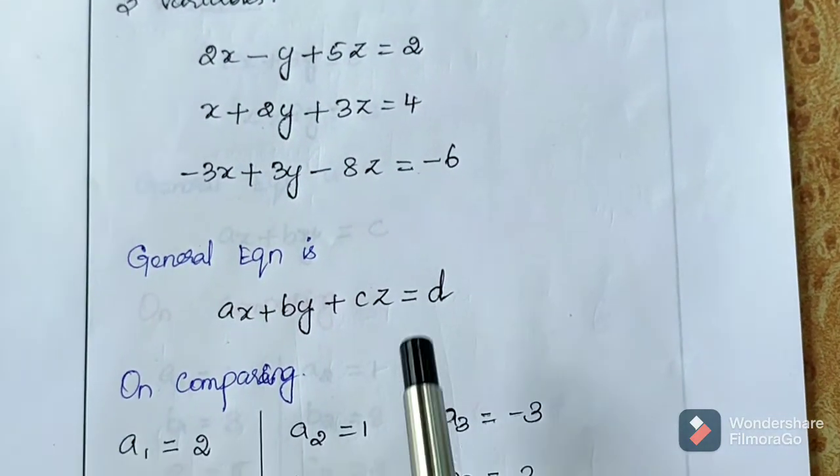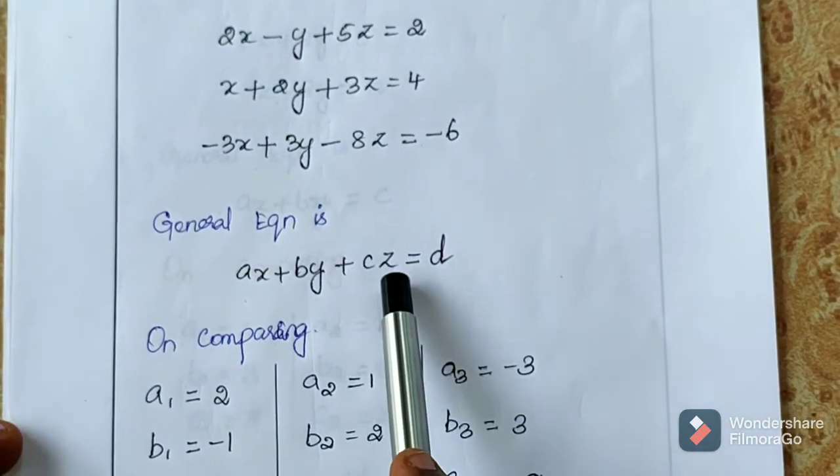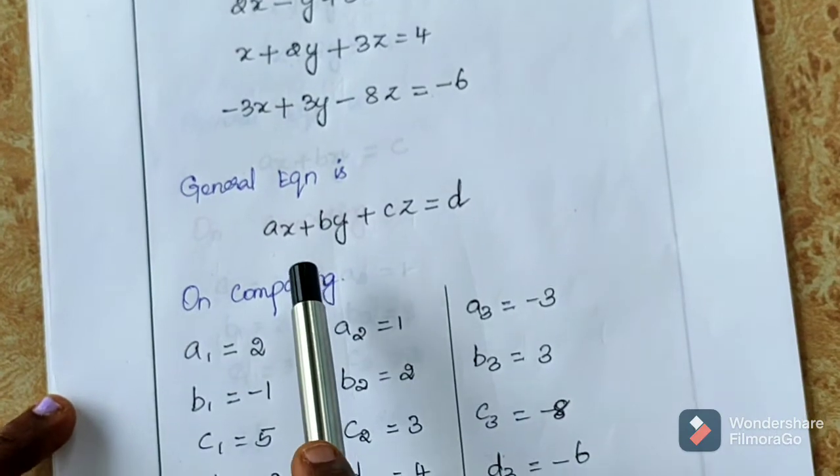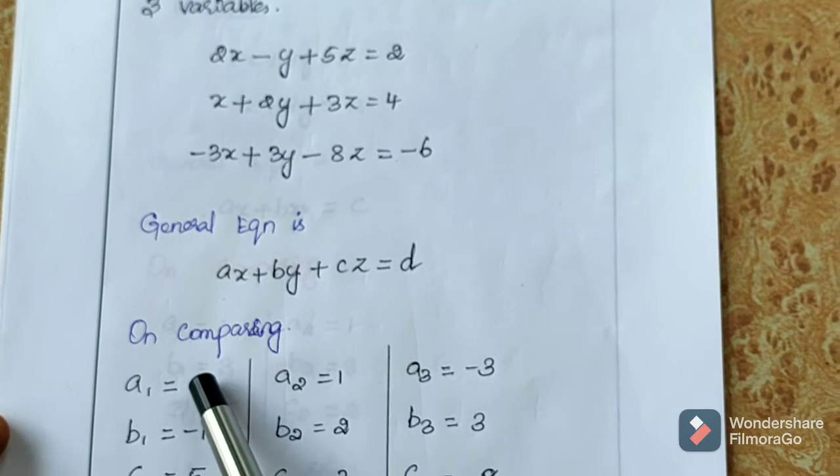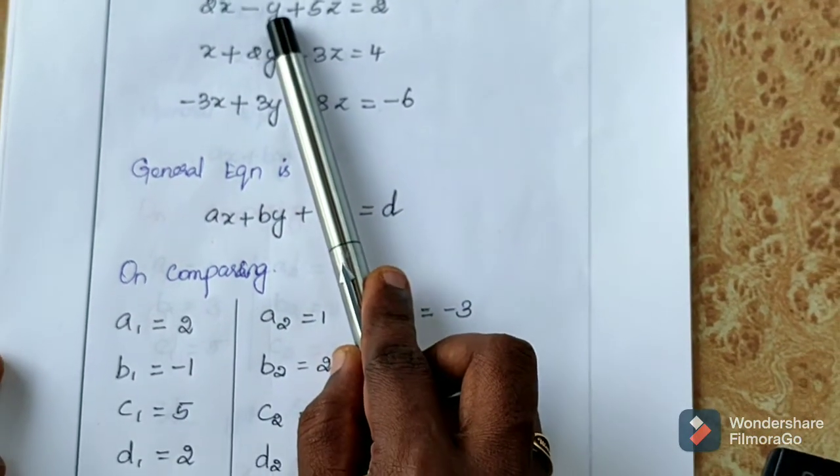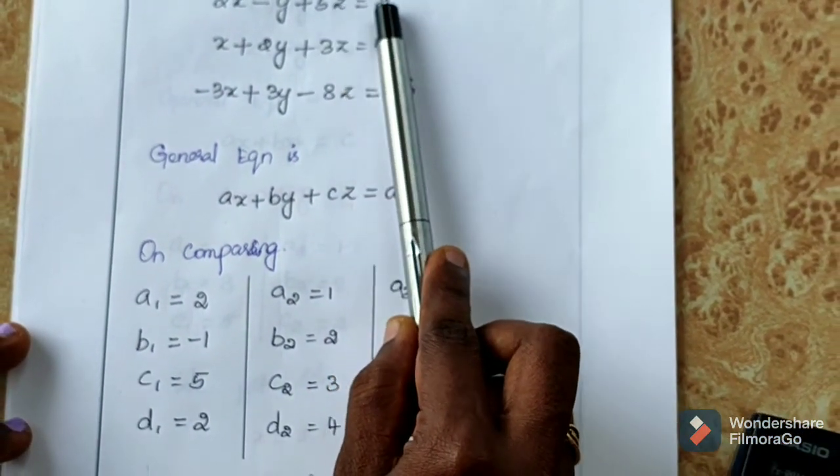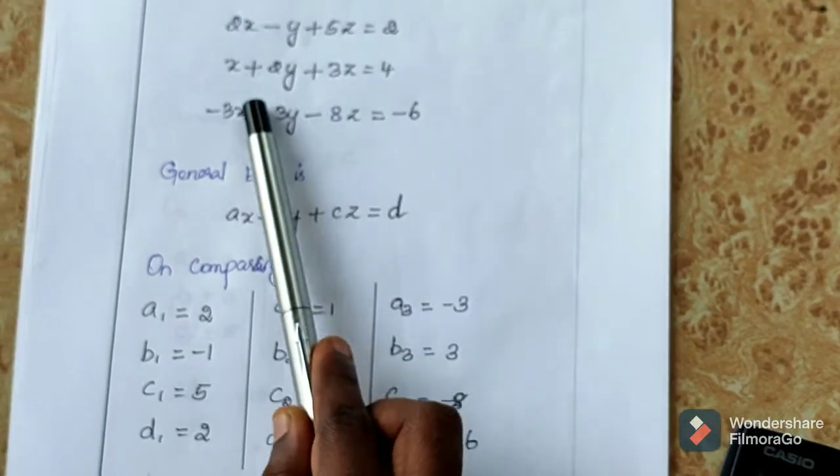On comparing our equation with the general equation, the coefficient of A1 is 2, coefficient of B1 is minus 1, coefficient of C1 is 5, and coefficient of D1 is 2.